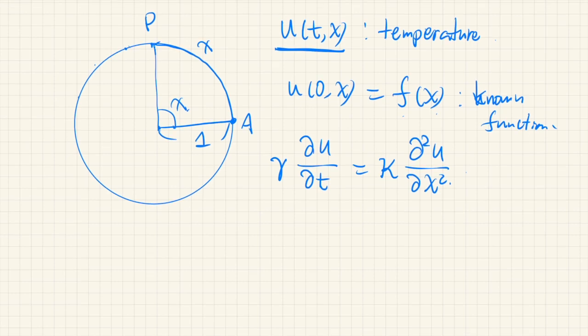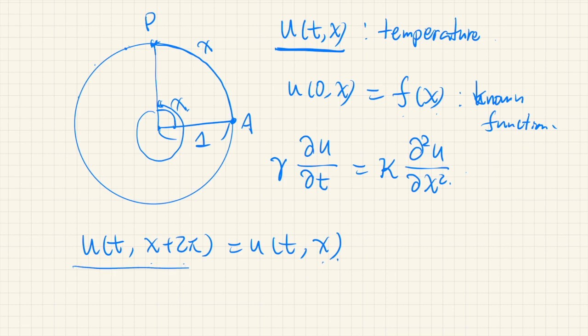it is natural to assume that this distribution of temperature is a periodic function with respect to the variable x. So that is, at any point in time, u of t, x plus 2π is equal to u of t, x. Because x plus 2π and x actually represents the same point. So we should have this periodicity of this function.